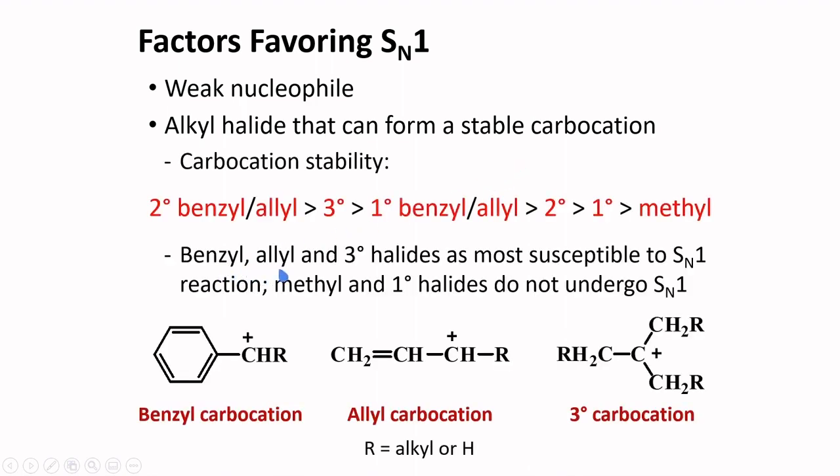Benzylic, allylic, and tertiary halides are most susceptible to SN1 reaction. Benzylic carbocation has a positive charge on a carbon right next to a benzene ring. Allylic carbocation has a positive charge right next to an alkene group. And tertiary carbocations are familiar to you. Be aware that methyl and primary halides do not undergo SN1.